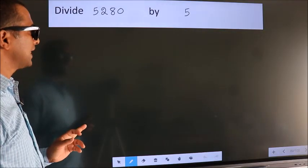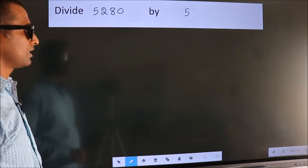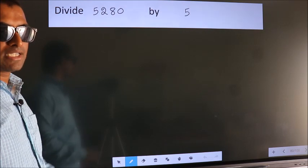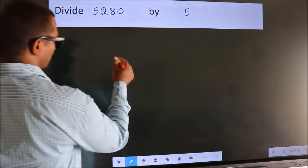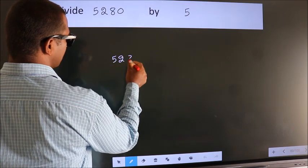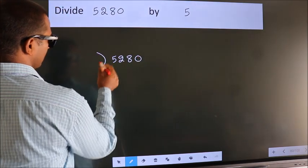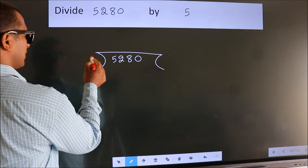Divide 5,280 by 5. To do this division, we should frame it in this way. 5, 2, 8, 0 here.